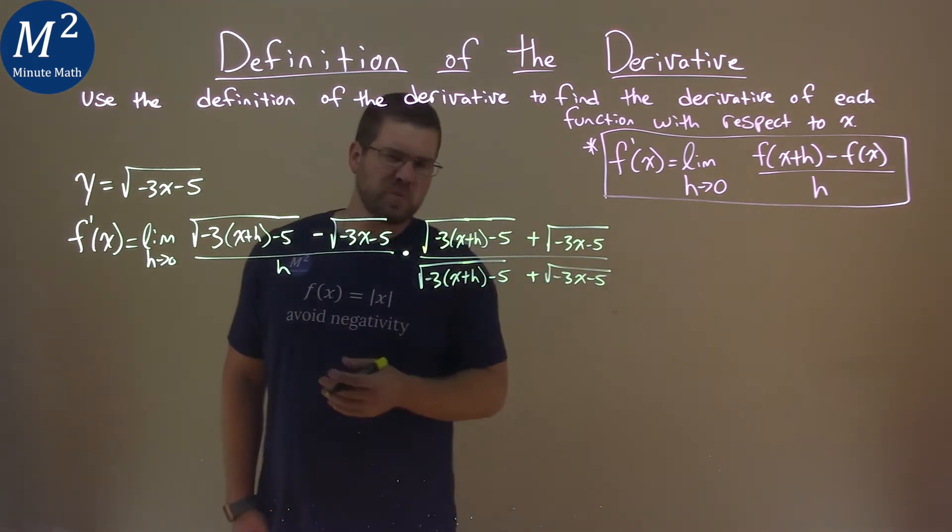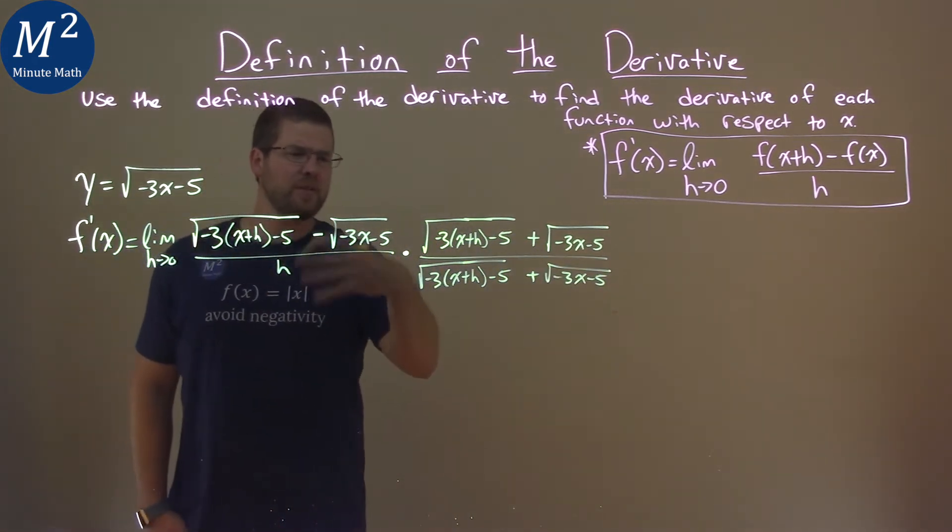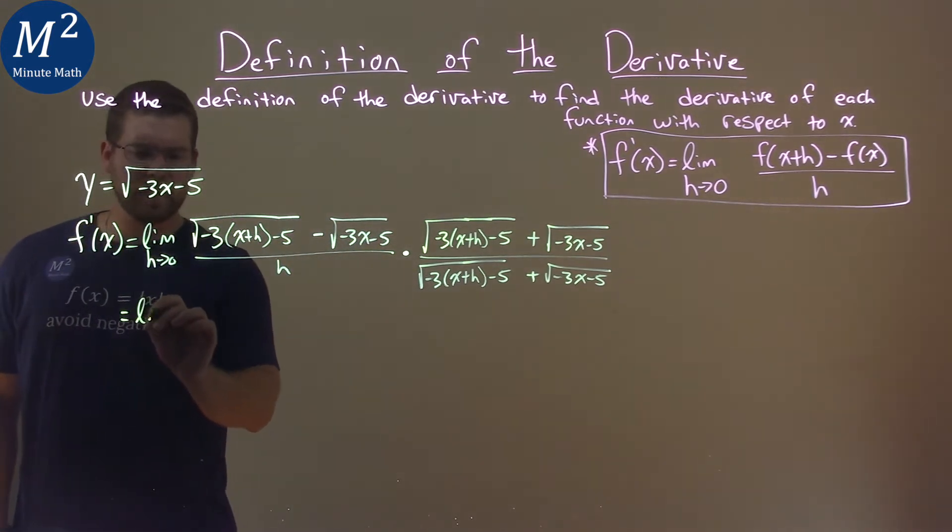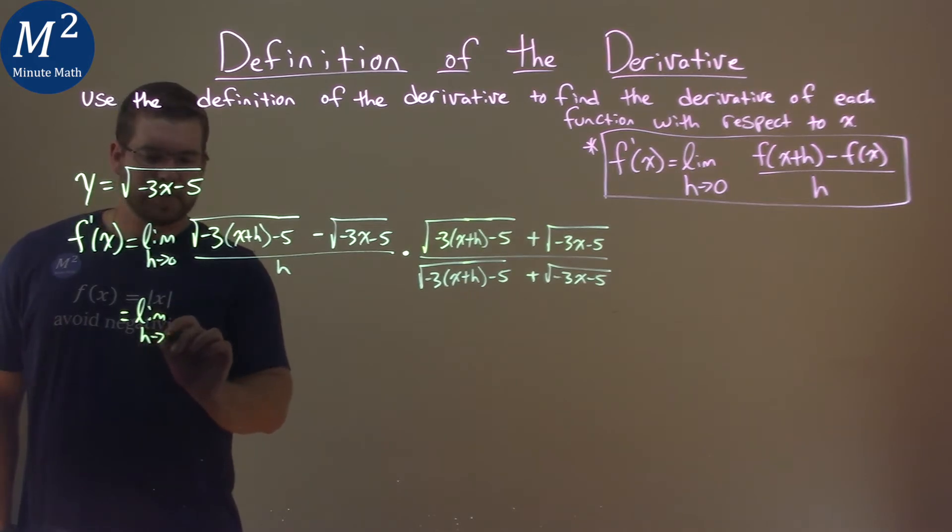And that conjugate, remember, is just 1, but it allows us to kind of do some fancy things. And this is a good technique when you have square roots. So again, this is the limit as h approaches 0.